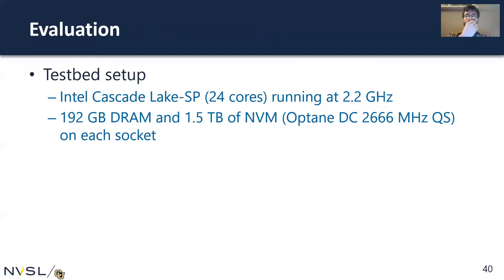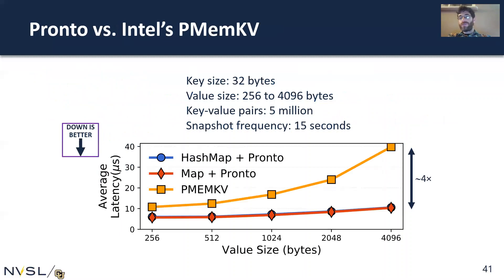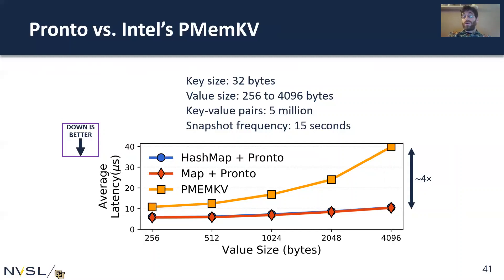We evaluated our code on real Optane memory — a machine with 192 gigabytes of DRAM and 1.5 terabytes of non-volatile memory per socket. Comparing Prontoized STL maps and STL hash maps to Intel's PMMKV, an industrial-strength key value store for Optane memory, our Prontoized versions outperform PMMKV by up to 4x. This demonstrates that with very little code, we can get really good performance out of existing well-tested code while still getting persistence.